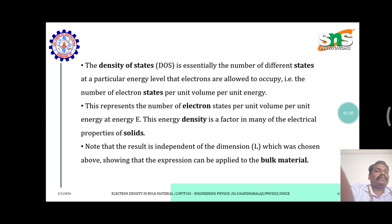The density of states (DOS) is essentially the number of different states at a particular energy level that electrons are allowed to occupy, the number of electron states per unit volume per unit energy.